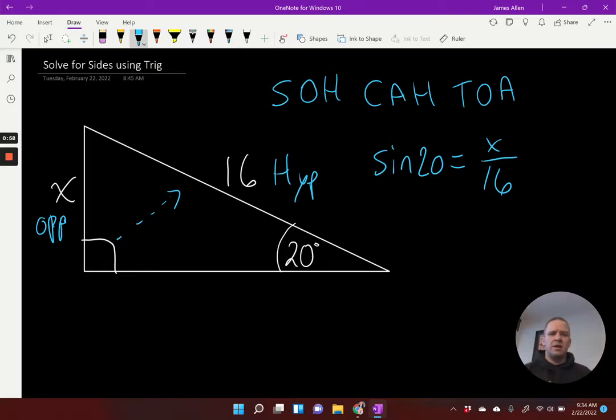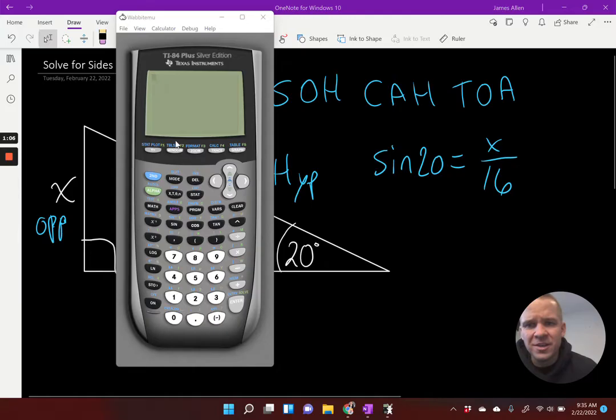So I'd have sine of my 20 degree angle is equal to the opposite, which is x over 16. I've got x in my numerator dividing by 16. I want to get x by itself. Sine of 20, if you plug that into your calculator, that is just a terrible decimal. In fact, let's try it right now. Let's type in sine of 20 into your calculator.